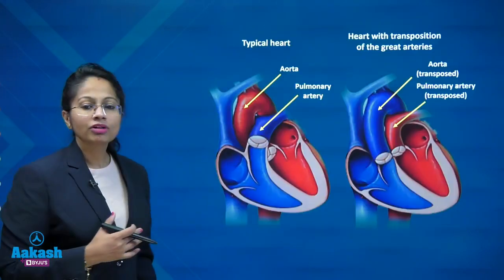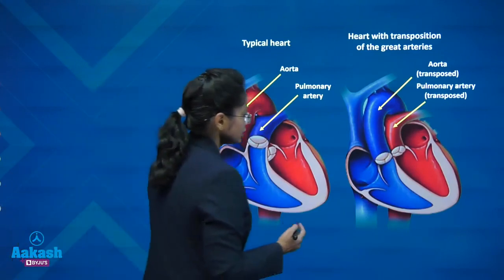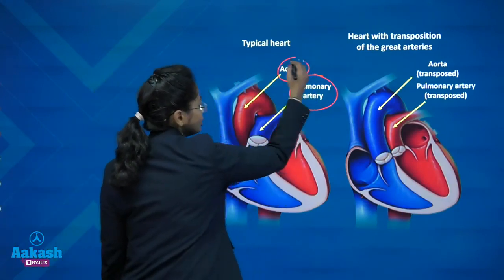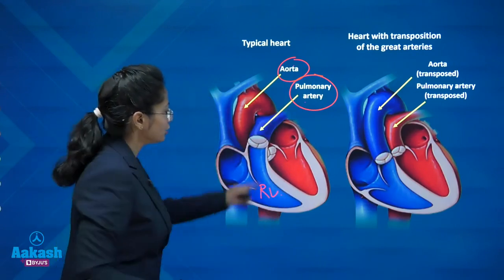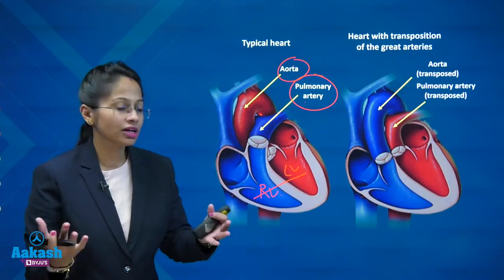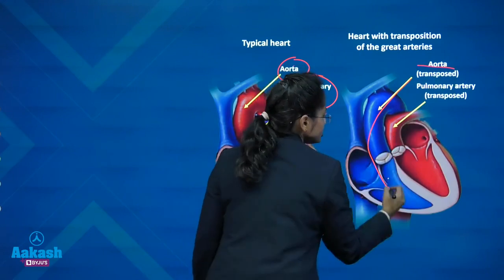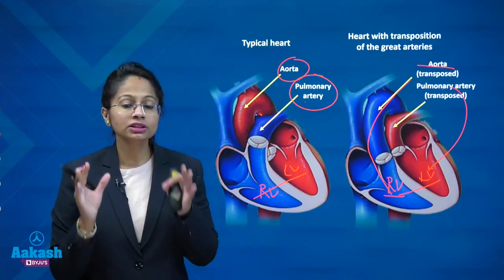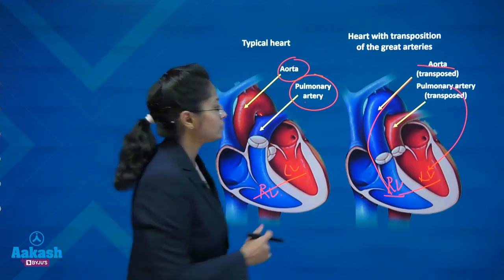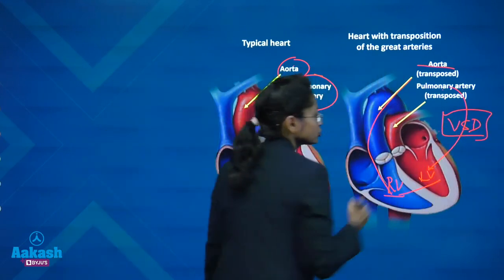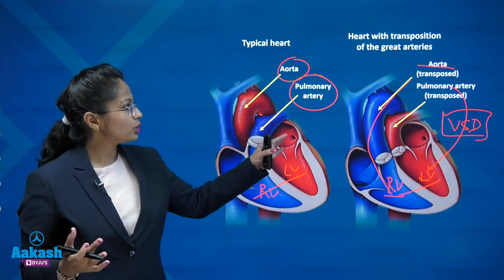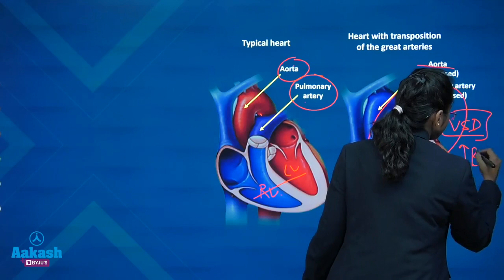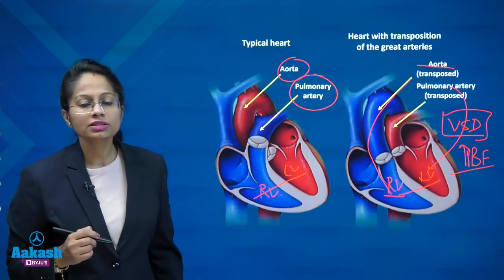In transposition of great arteries (TGA), the aorta arises from the right ventricle and the pulmonary artery arises from the left ventricle. TGA is always associated with a ventricular septal defect for sustainability of life, and because of this VSD there will be increased pulmonary blood flow. So TGA is associated with increased pulmonary blood flow.